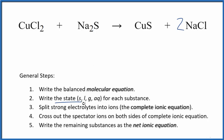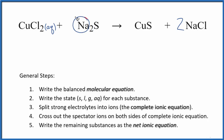Now we can write the state for each substance. Chlorides are very soluble — we write AQ, aqueous, dissolved in water. Sulfides in general are not soluble, but if you have a sodium compound or a potassium compound, that's going to be soluble, so AQ — this will be soluble, dissociate into its ions.